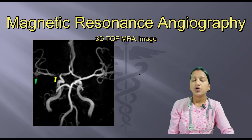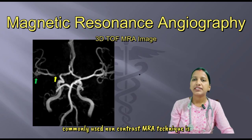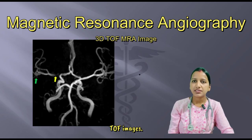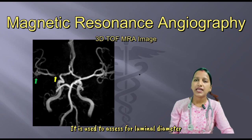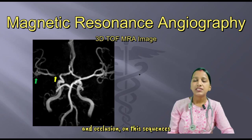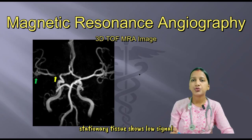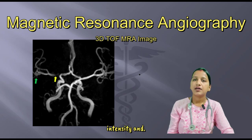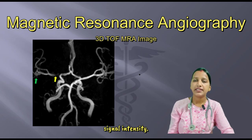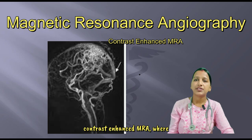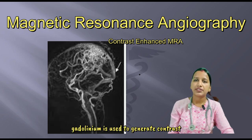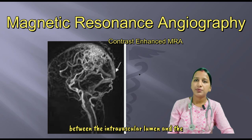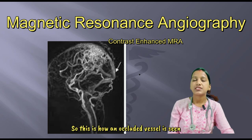Coming to MRA: the commonly used non-contrast MRA technique is TOF imaging, used to assess luminal diameter and occlusion. On this sequence, stationary tissue shows low signal intensity, while flowing blood shows increased signal intensity. For contrast-enhanced MRA, gadolinium is used to generate contrast between the intravascular lumen and the surrounding tissue. This is how an occluded vessel is seen on an MRA.